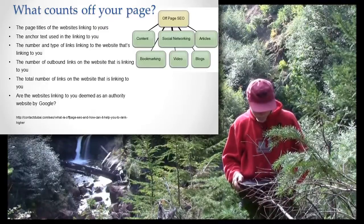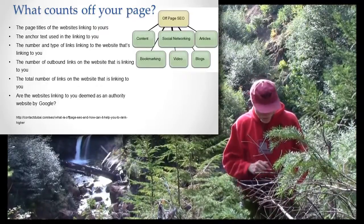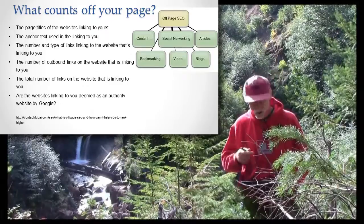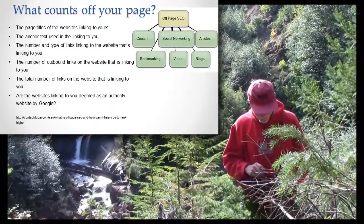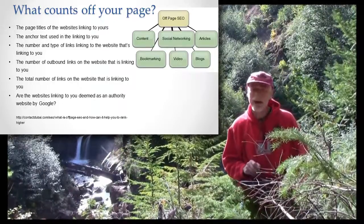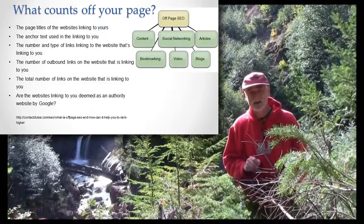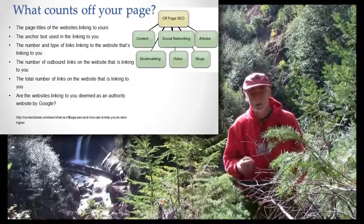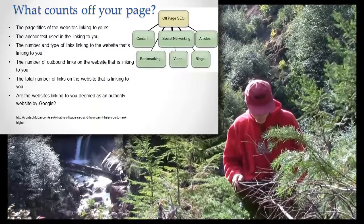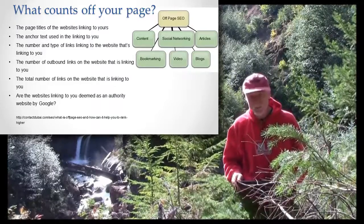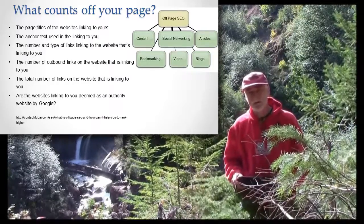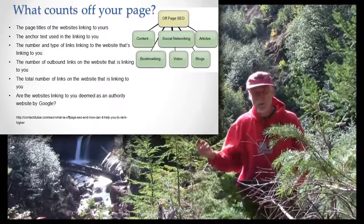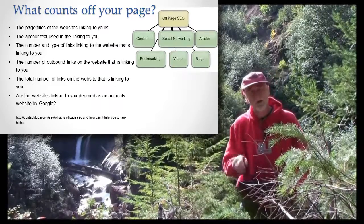The number and types of links coming into the websites that link to you — all these different things matter. The number of outbound links on the website linking to you: is this a site that links a lot, or only a little bit? The total number of links on that page also matters. Does it have only one link and it's to you? That may indicate you're really important about that subject. Or does it have a billion links and you're just one of a billion? Are the websites linking to you deemed as an authority website by Google? That's more about the popularity of those websites and whether they're considered really important sites by all these criteria.